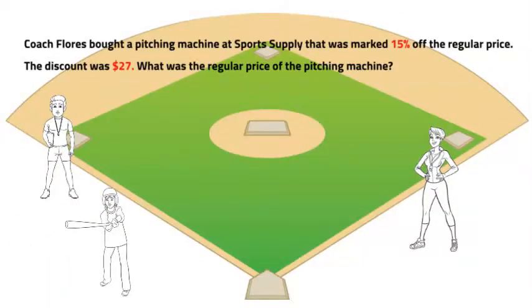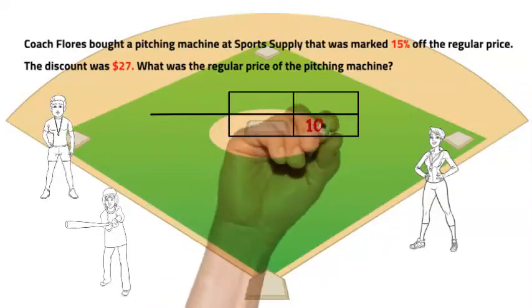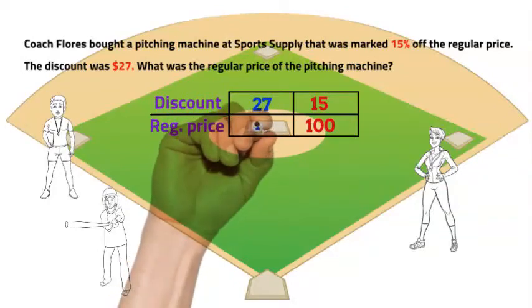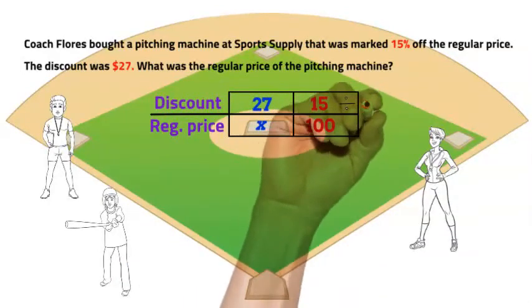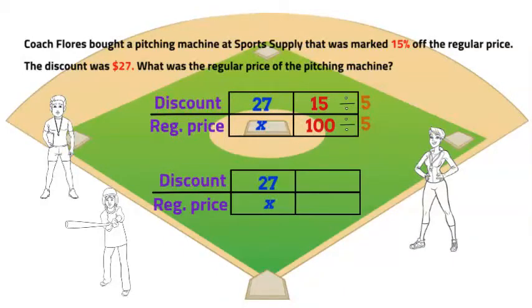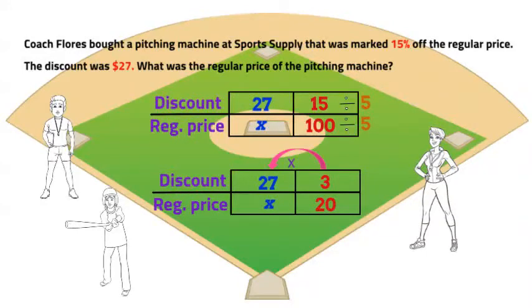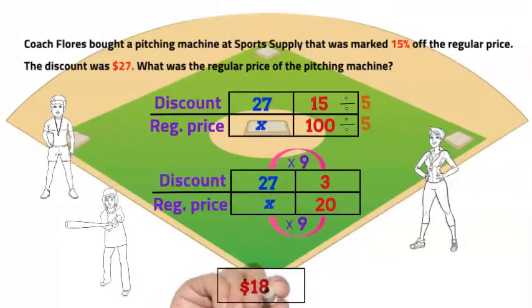Maria, you're up. Here's your problem: Coach Flutus bought a pitching machine at Sports Supply that was marked 15% off the regular price. The discount was $27. What was the regular price of the pitching machine? Great start. The labels are discount over regular price. The 15 is a percent, so it goes on top of the 100. The 27 is the discount, so it goes in the numerator and X goes in our denominator. We can simplify the second ratio by dividing by five, and our proportion is now 27 over X equals 3 over 20. Three times what is 27? That's right, it's 9. Do the same thing to the denominator: the regular price of the pitching machine was $180. You just hit a home run.